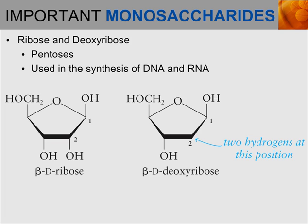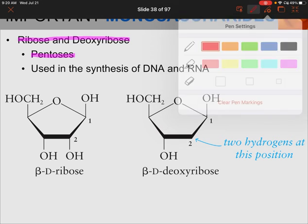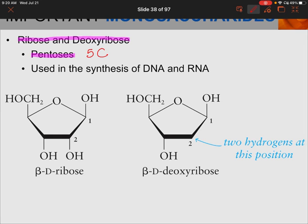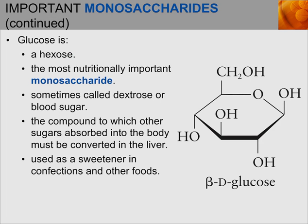Now let's go over some important monosaccharides, disaccharides, and polysaccharides. Starting with monosaccharides, two really important ones are ribose and deoxyribose. You can see their structures below — they're both pentoses, meaning they both have five carbons in their chains. Both of these are used in the synthesis of DNA and RNA. DNA makes up our genetic identity, and we'll discuss RNA later, so keep ribose and deoxyribose in mind.